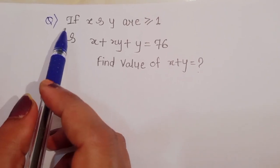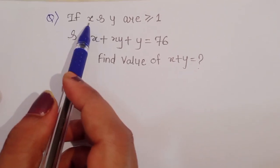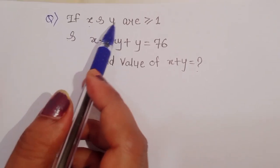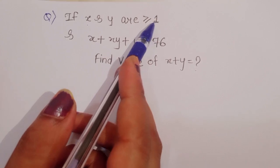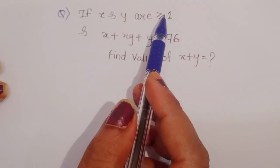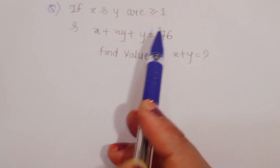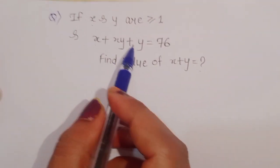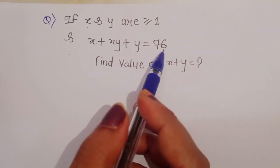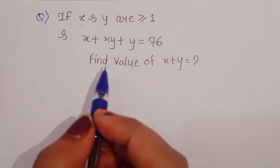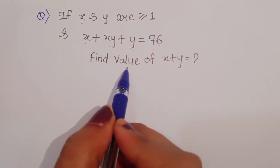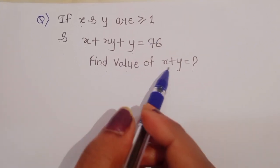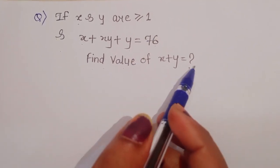The question is: given that x and y are positive integers (greater than or equal to 1) and x plus xy plus y is equal to 76, find the value of x plus y.